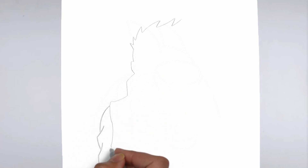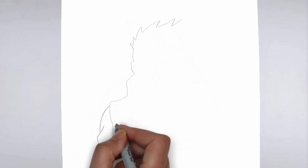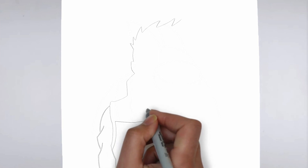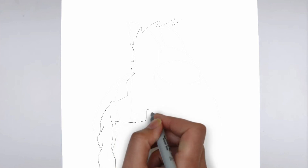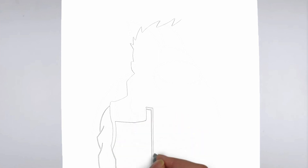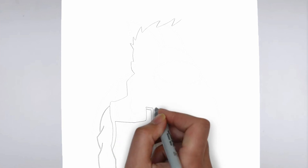Step 1: Beginning. Let's begin with the basic shape. Sketch light outlines to determine its size and placement on the paper.